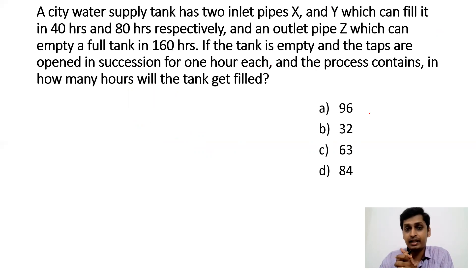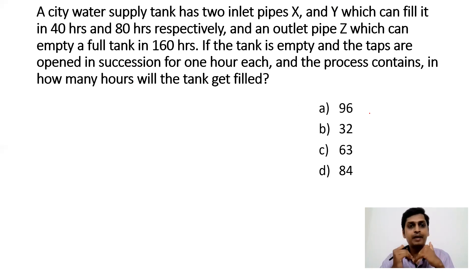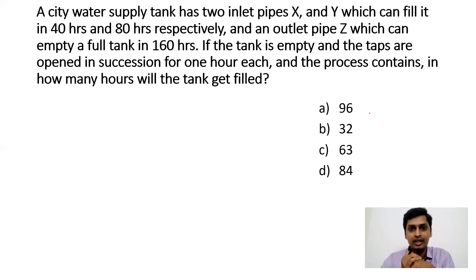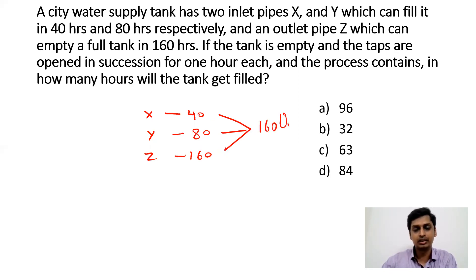A city water supply tank has two inlet pipes X and Y, which can fill it in 40 hours and 80 hours respectively, and an outlet pipe Z which can empty a full tank in 160 hours. If the tank is empty and taps are opened in succession for one hour each and the process continues, in how many hours will the tank get filled? Taking LCM of 40, 80, and 160 gives 160 units as the total capacity.